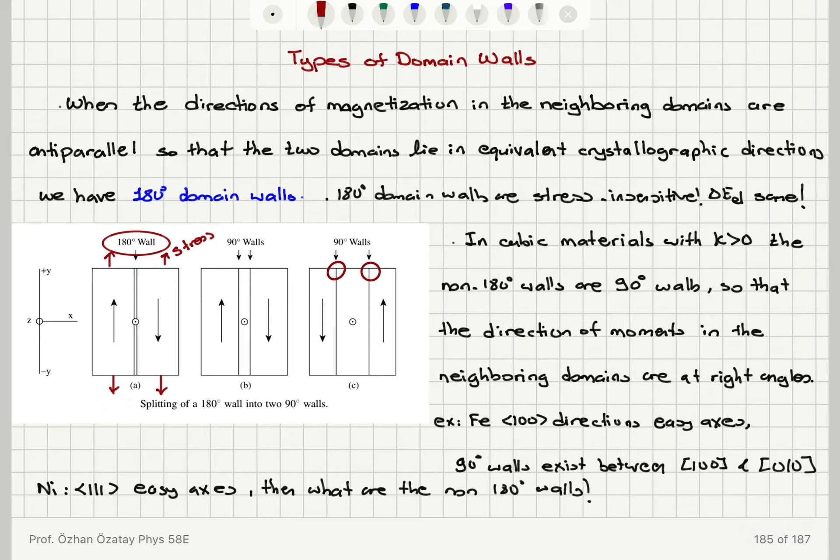In iron with 100 easy axis, for example, 90 degree domain walls will exist between 100 and 010 directions.